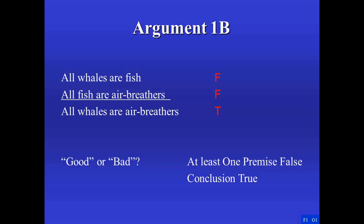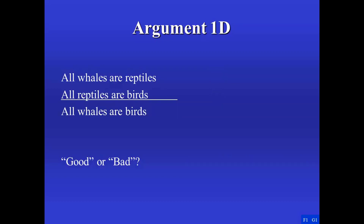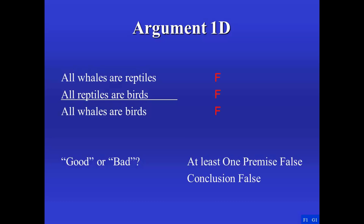You might notice that 1b has something in common with 1a — it's essentially of the same form. Here's argument 1d. All whales are reptiles. All reptiles are birds. Therefore, all whales are birds. This one may seem a little confusing — all three claims, both premises and the conclusion, are false. But you might note that there's something good going on with this argument. If we were to imagine that the premises were true — that whales were reptiles and reptiles were all birds — then wouldn't it have to be the case that all whales are also birds? You might see that there's the same kind of connection between the premises and conclusion as in the previous two arguments.